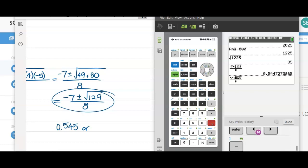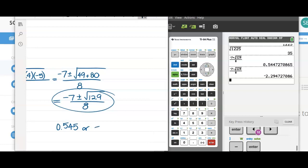So add radical 129, subtract radical 129. And we get negative 2.295.